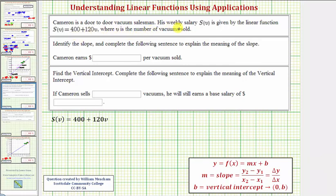Cameron is a door-to-door vacuum salesman. His weekly salary, S(V), is given by the linear function S(V) = 400 + 120V, where V is the number of vacuums sold.